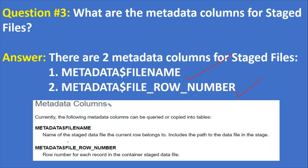Here is some additional information. Currently, the following metadata columns can be carried or copied into tables. METADATA$FILENAME is the name of the staged data file the current row belongs to, and it includes the path to the data file in the stage. METADATA$FILE_ROW_NUMBER is the row number for each record in the staged data file. For example, if your file has 10 rows, each row is assigned a unique incrementing number starting from one.